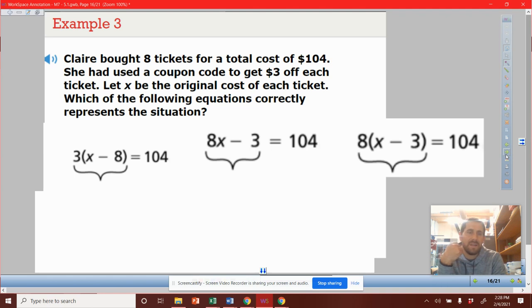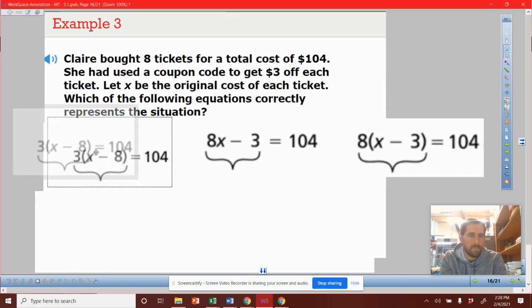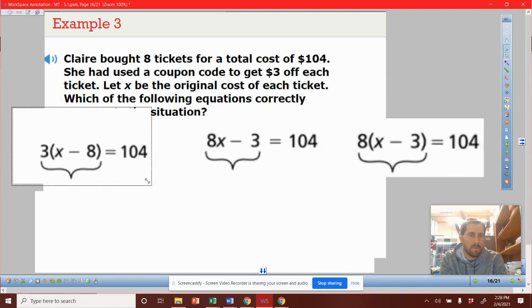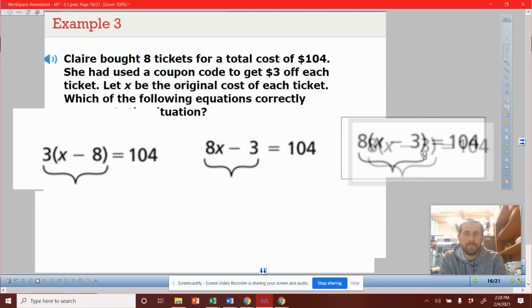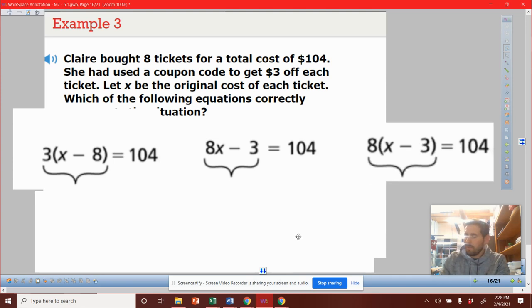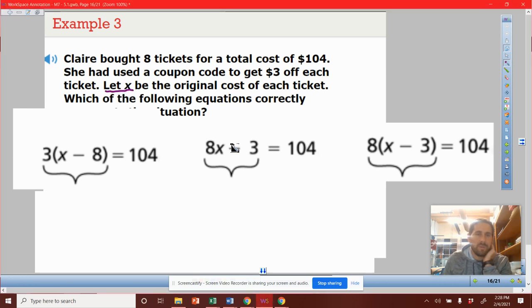Which of the following expressions correctly represent the situation? So you'll see there's one, two, three of them. Which one is the best one for us to pick? So understanding why each of these are written the way they are, understanding what the variable x represents is what we're really looking at. So x is a ticket price.